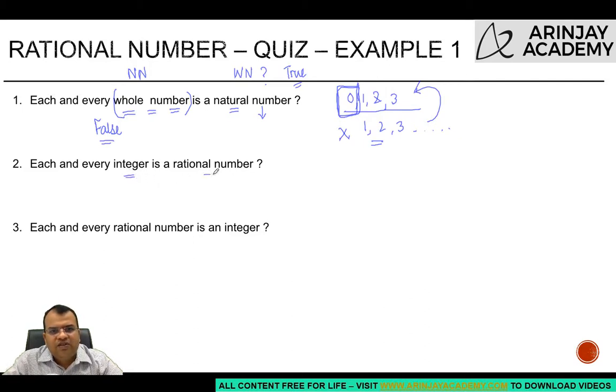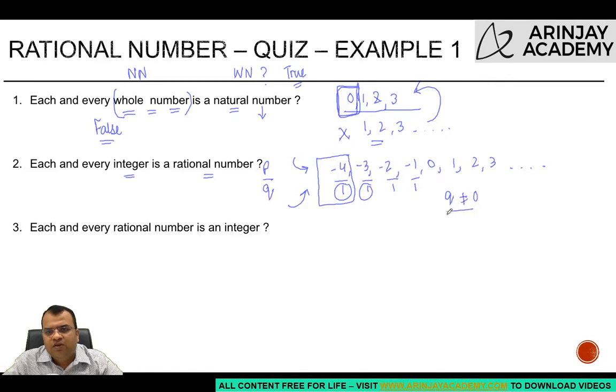Each and every integer is a rational number. Now integers, as I told you, are minus 4, minus 3, minus 2, minus 1, 0, 1, 2, 3 and so on. We can write every integer as that integer divided by 1, just what I explained to you about natural numbers. In this case, if we compare, the numerator is an integer, the denominator is also an integer. Since the denominator is 1 everywhere, q is not equal to zero. This means every integer can be a rational number. Therefore this statement is true.